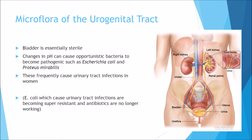The urogenital tract: the bladder should theoretically be sterile. However, if there are any changes in pH, this can cause opportunistic bacteria to become pathogenic — for example E. coli and Proteus mirabilis, which are the primary cause of urinary tract infections in women. An emerging concern is that E. coli is becoming resistant to antibiotics, meaning those suffering from urinary tract infections are no longer able to receive effective antibiotic treatment.